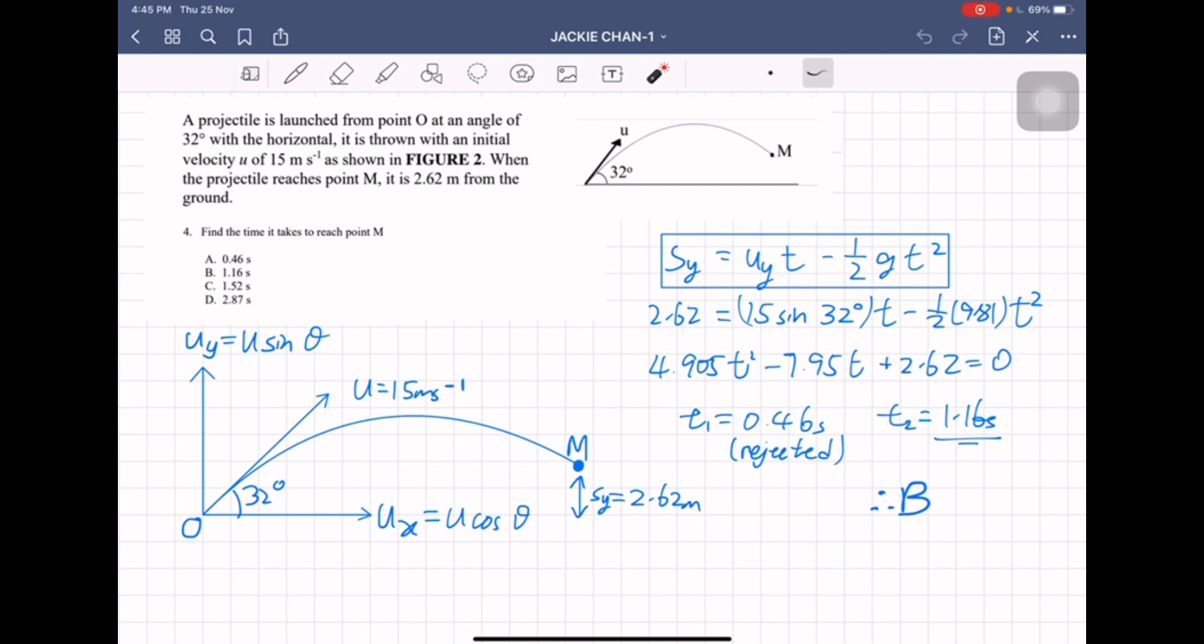The next step is we resolve u and we get uy equals u sine theta, ux equals u cosine theta. Then the next step is we use the equation sy equals uy t minus one half g t squared.